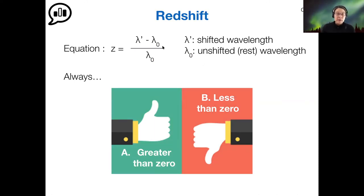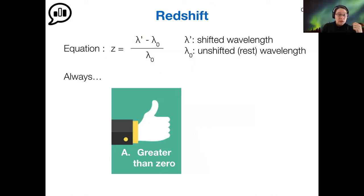The majority of you are saying greater than zero. Yeah. So you're saying if we're going from a shorter wavelength to a longer wavelength, that's a redshift. It's being stretched. So then this number is always going to be greater than lambda naught, so this always has to be positive as a result. Yeah. So that's right. It has to be greater than zero, and the reason is because lambda prime is always longer.